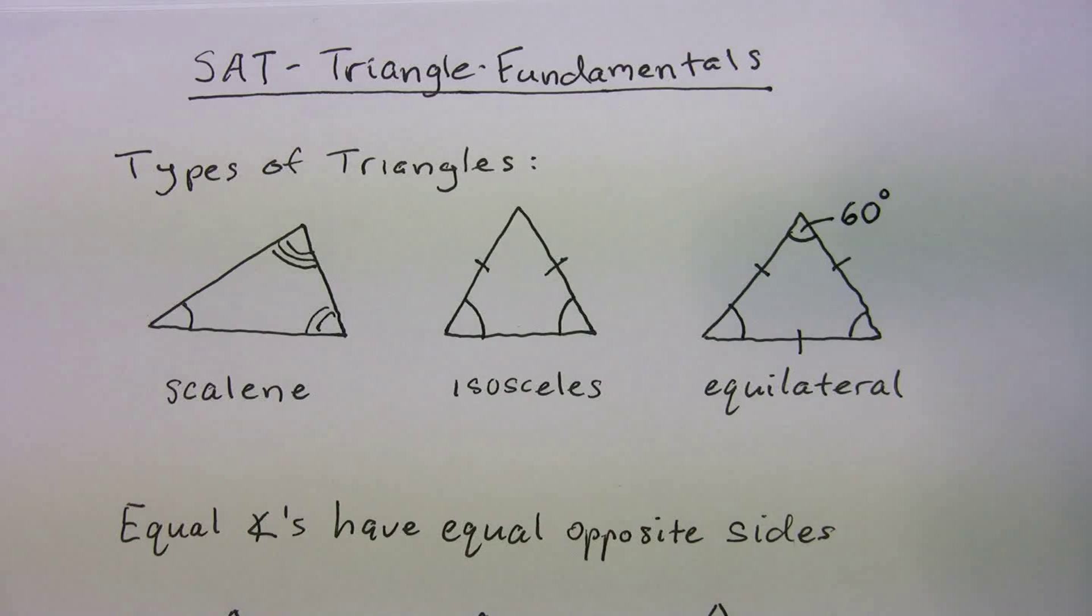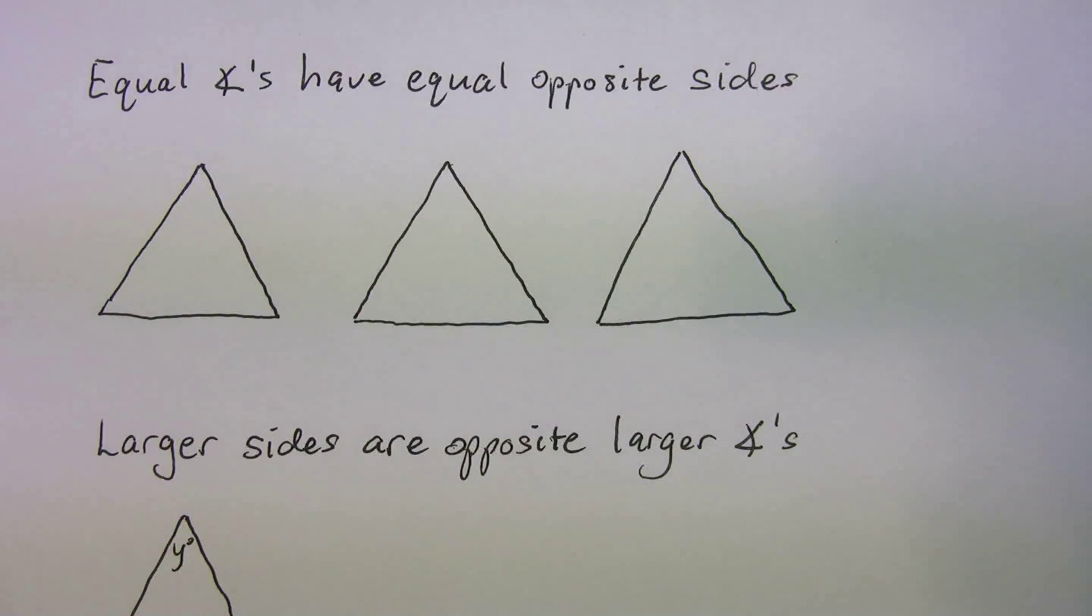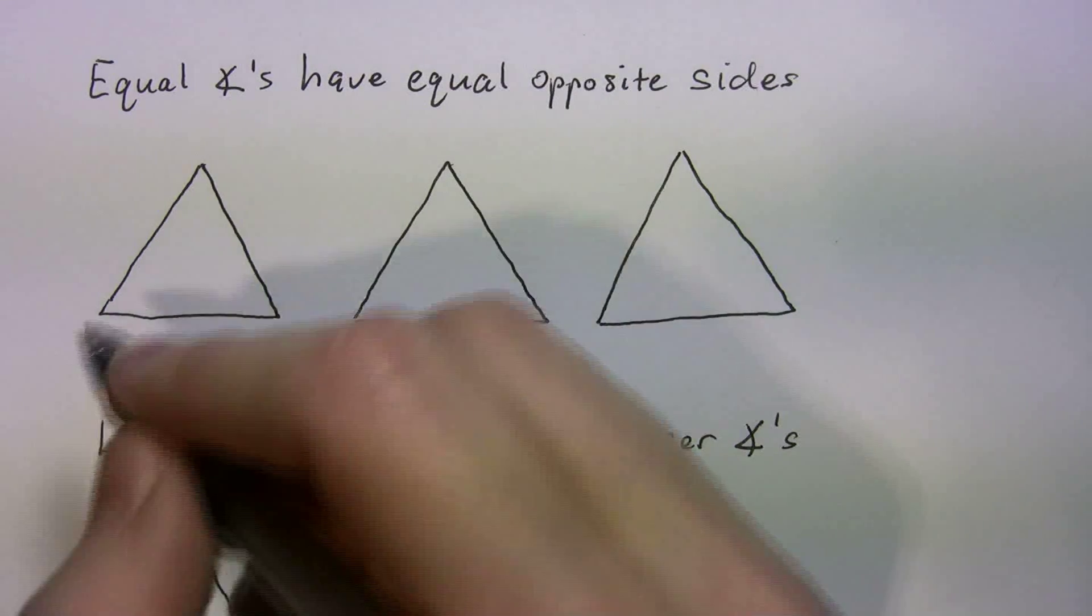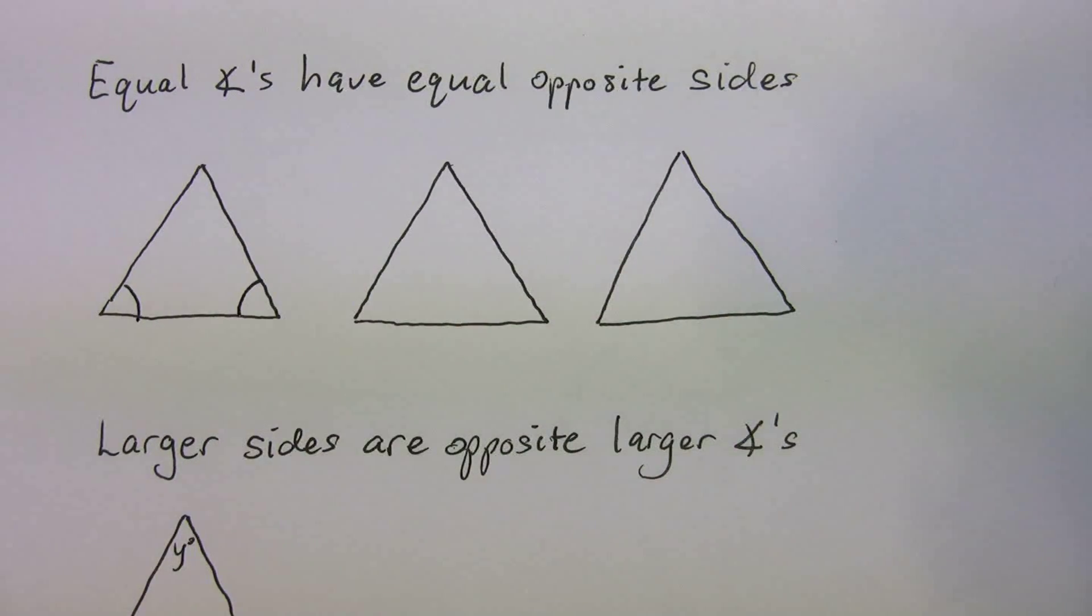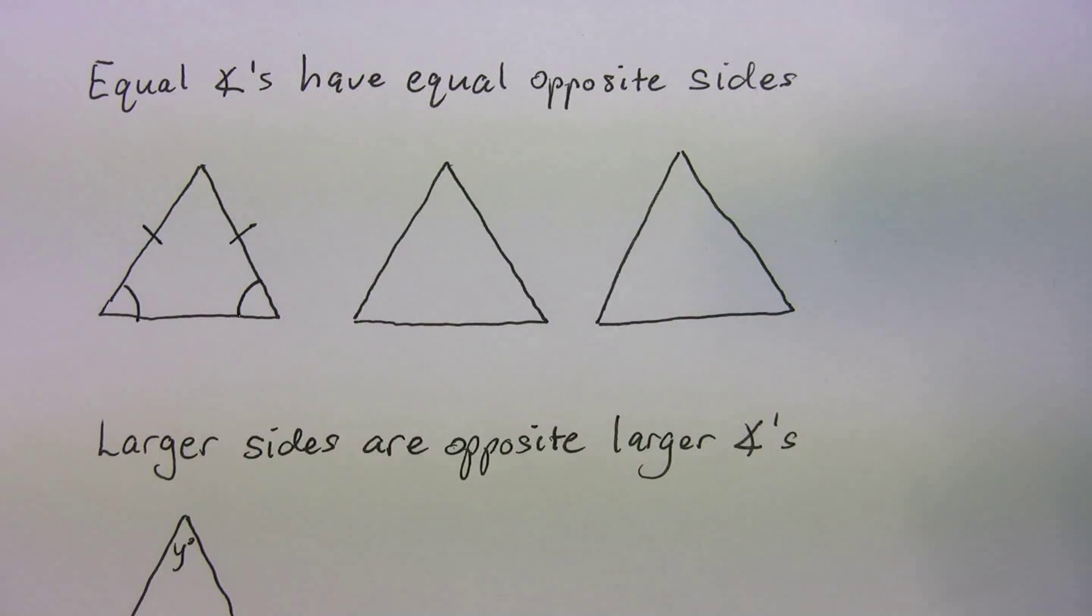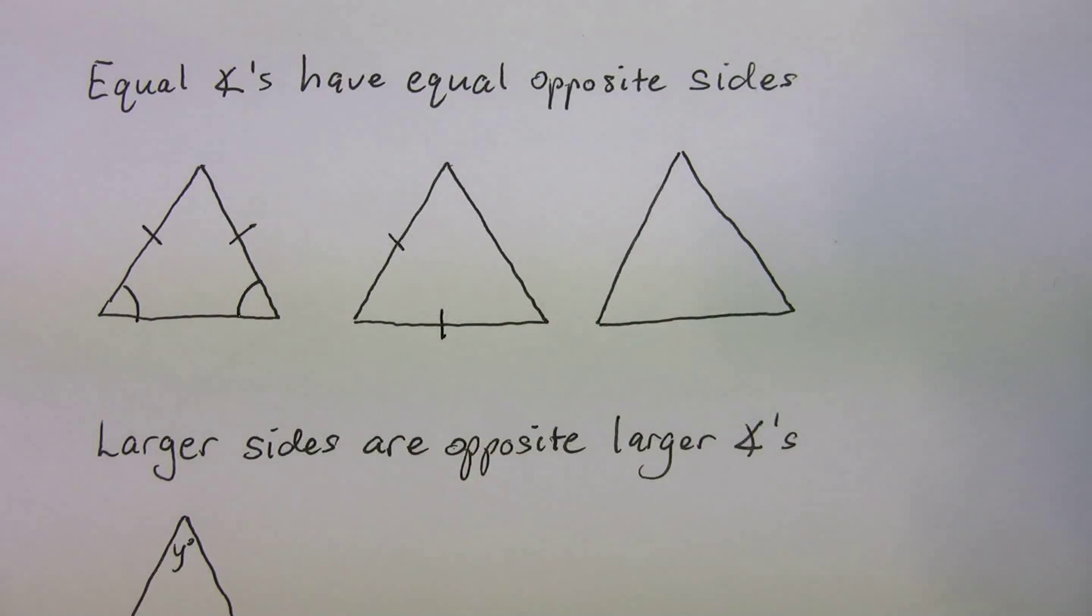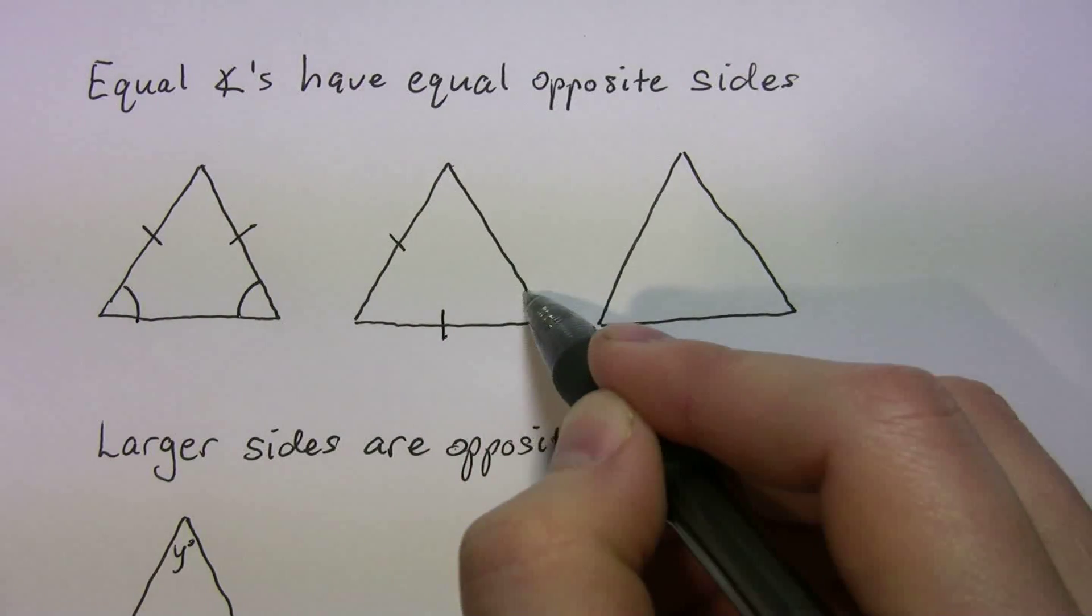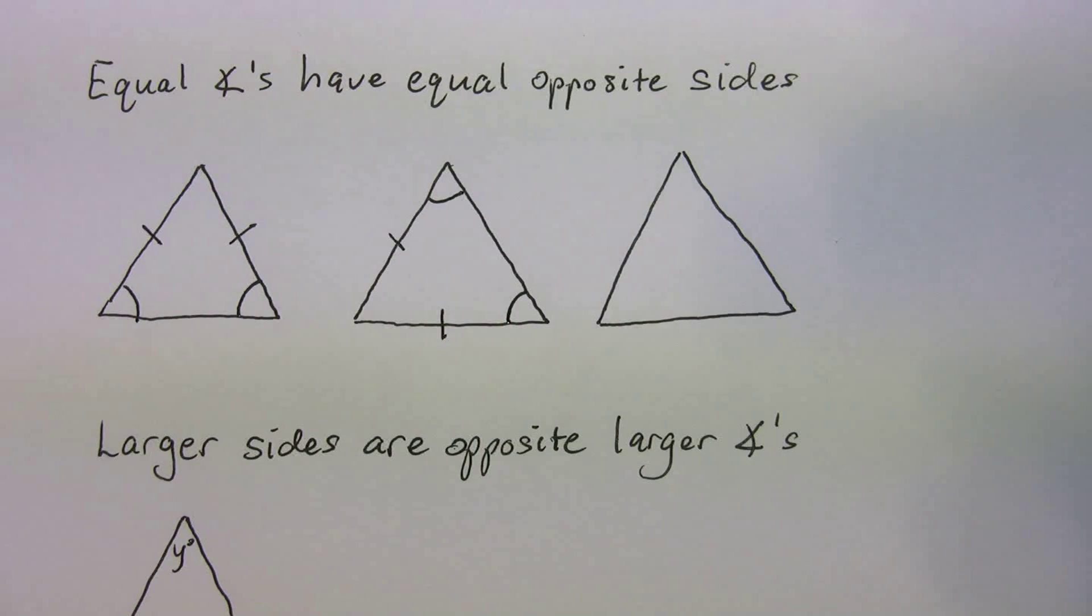So, another property of triangles that you should know, I have it on the bottom here, equal angles have equal opposite sides. So, let's show you some examples. If equal angles have equal opposite sides, if I tell you this angle is equal to that angle, their opposite sides are also equal. And similarly, if I tell you, let's say this side is equal to this side, their opposite angles are equal. So, that angle is equal to that angle.